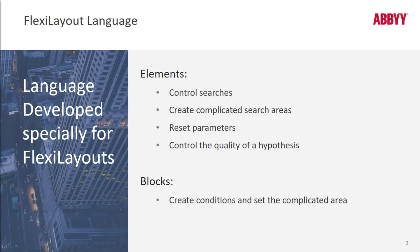FlexiLayout Language is used to help us control searches, create complicated search areas, reset parameters, and control the quality of a hypothesis. When I mention creation of complicated search areas, remember that this is a markup tool. FlexiLayout Studio is a markup tool, so this language can help us create areas that we want to OCR in an intelligent and dynamic manner. Conditional arguments are definitely part of that.